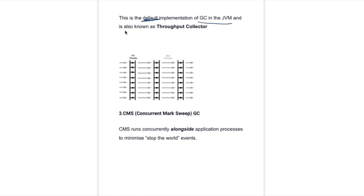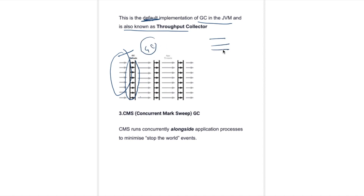To avoid that, we have parallel garbage collection, where multiple threads simultaneously collect the garbage. This is the default implementation of GC in JVM and is also known as the throughput collector. Multiple GC threads simultaneously work on the heap area using the mark-and-sweep process and collect the garbage.